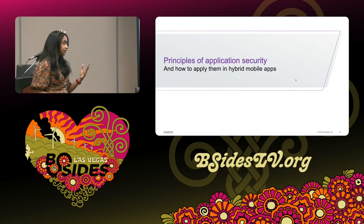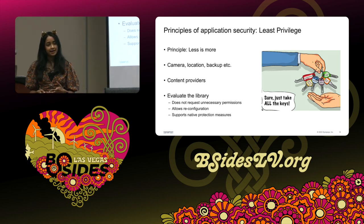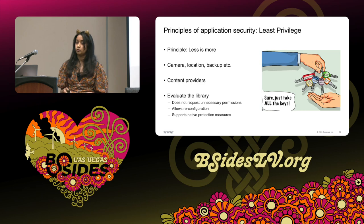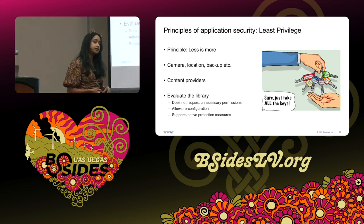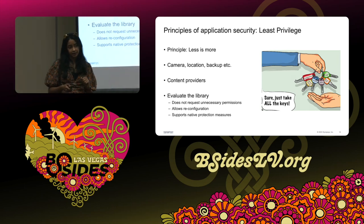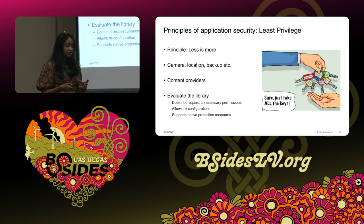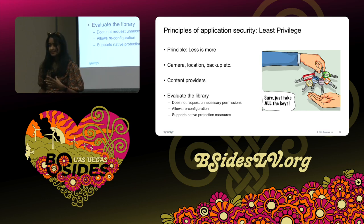The first principle is the Principle of Least Privilege — less is more. You need a granular permission model and should work with the minimum number of privileges needed. Mobile applications need the user's permission to access features like Bluetooth, location, Apple Pay, or photos. Your app shouldn't ask for permissions it doesn't really need — users will get suspicious, and you may violate data privacy laws depending on where the application is used.